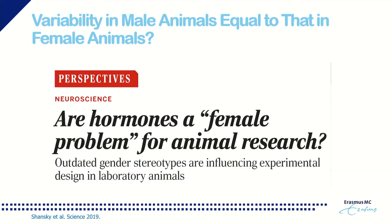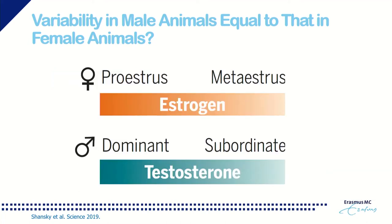Is variability in male animals actually smaller than in female animals? That was the longstanding paradigm. Female animals have the menstrual cycle and therefore more intra-animal variability. But male animals housed together show quite significant inter-animal variability, because dominant and subordinate animals have very different testosterone levels. So there is no good or bad choice, but it is very important to know why you make a certain choice for a specific sex of animal.